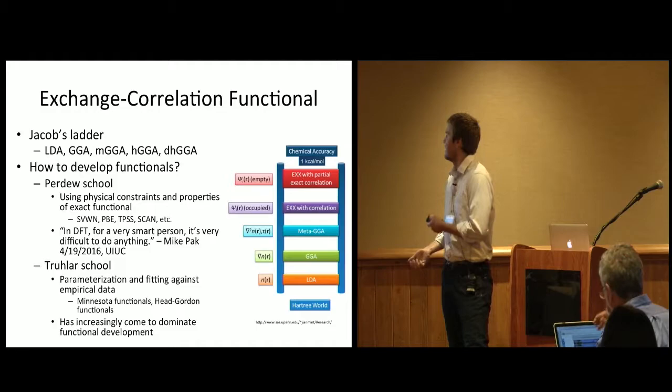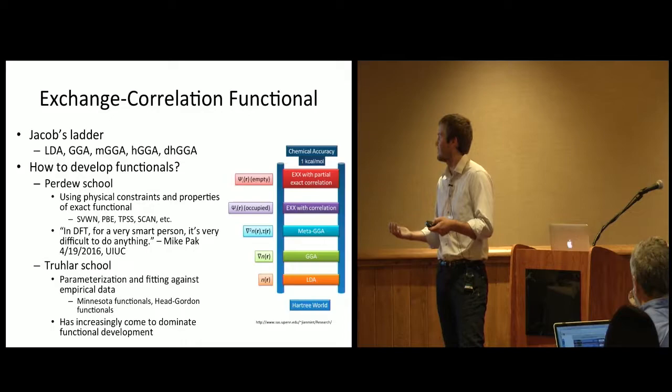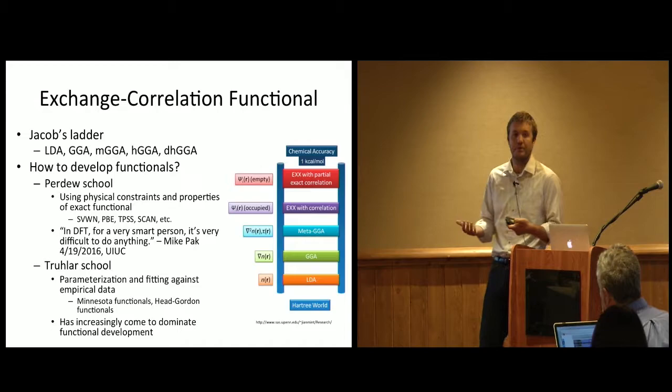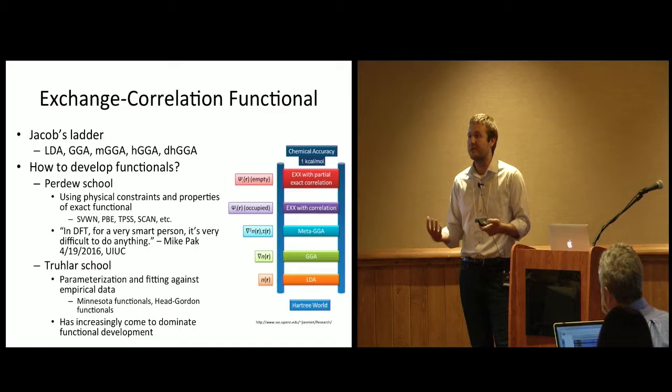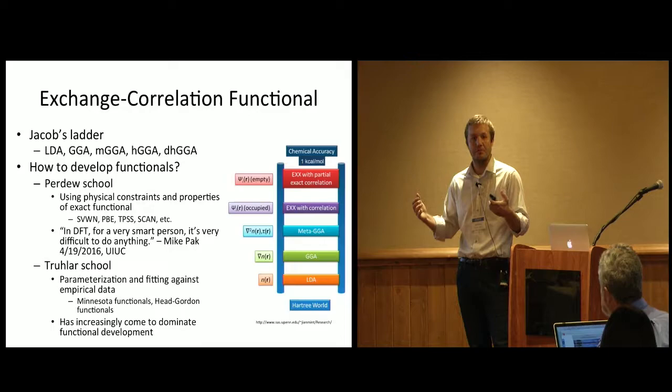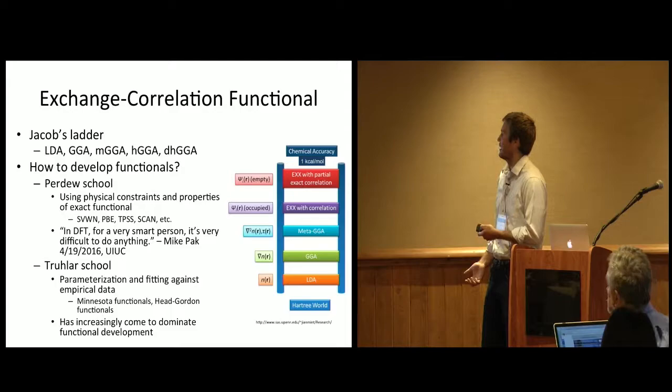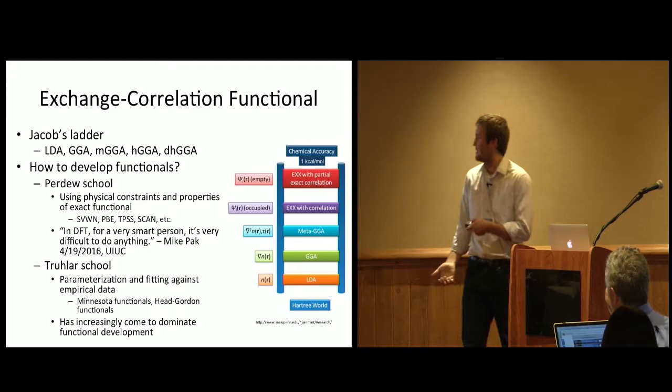So that's a hierarchy of functionals, but how do we actually develop them? I've grouped this into two broad schools. I have what's called the Purdue School here, named after John Purdue at Temple now. He uses physical constraints and properties of the exact functional. So while we don't know what the exact functional is, we can prove certain properties of it. If I squish or pull apart the density, I know the exchange correlation functional should behave in a certain way. There's various other constraints, and he seeks to construct a functional that satisfies these. I have this quote from someone in my group that says in DFT, for a very smart person, it's very difficult to do anything.